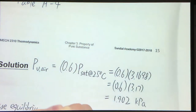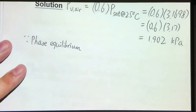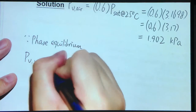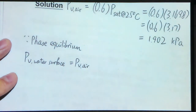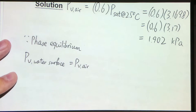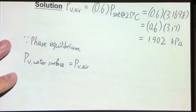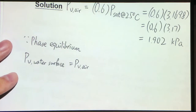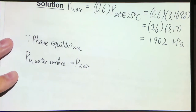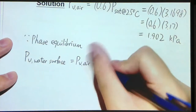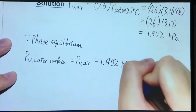What do we mean by phase equilibrium? Phase equilibrium means that the whole body of air has the same vapor pressure throughout. In other words, the vapor pressure at the water surface will be equal to the vapor pressure of the air. The reason is that for the portion of air in direct contact with the water surface, it should have the same vapor pressure. At phase equilibrium, no more water vapor can move into the remaining parts of the air body, so the vapor pressure equals 1.902 kilopascal.